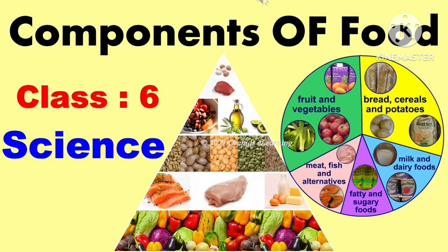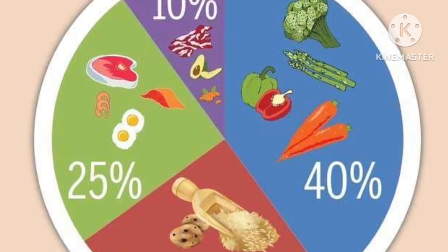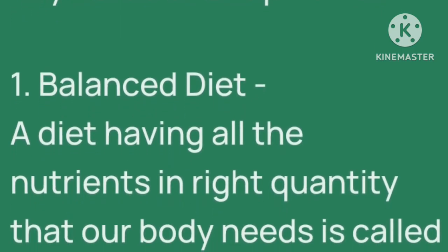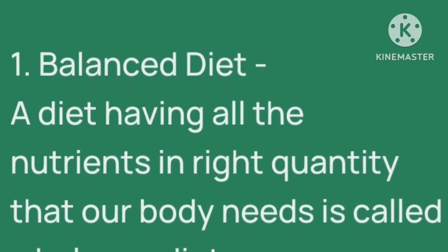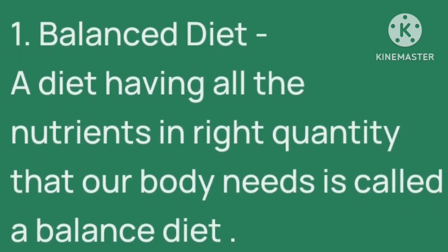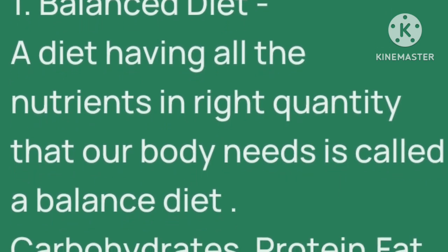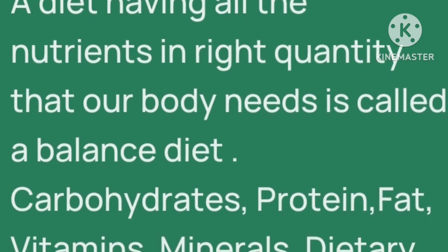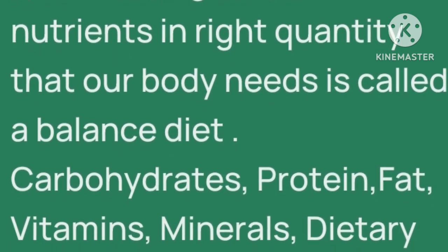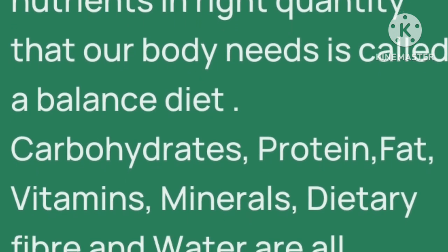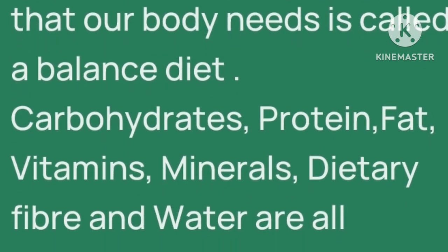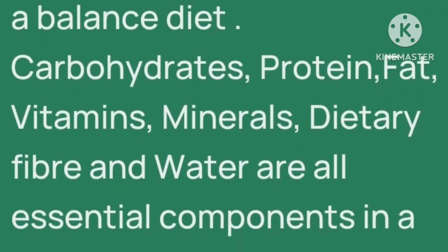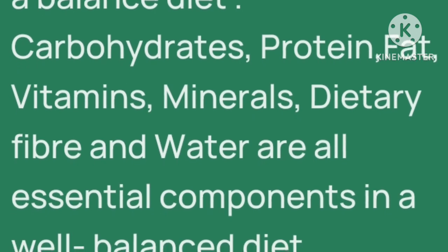Your first keyword is balanced diet. Balanced diet क्या होती है? Our diet having all the nutrients in right quantity that our body needs is called a balanced diet. एक diet जिसमें सभी nutrients एक right quantity में होते हैं जिसकी हमारी body को आवश्यकता होती है. जैसे carbohydrate, protein, fat, vitamin, minerals, dietary fiber and water are essential components in a well-balanced diet.